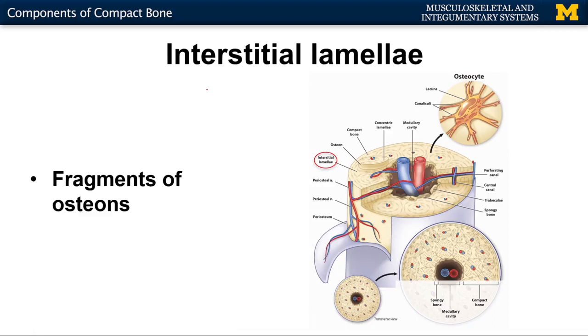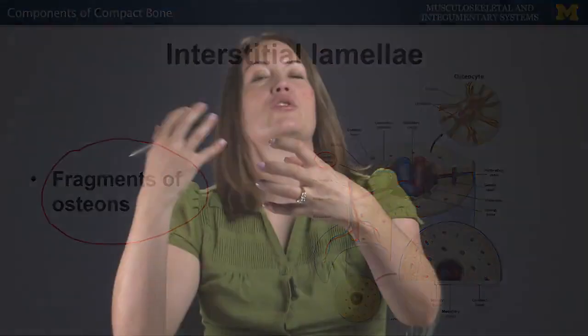Osteons are going to be dynamic and change throughout life. You'll have the formation of new osteons and the breakdown of old osteons — and that's what interstitial lamellae are. You'll have these nice structurally sound osteons, and then fragments of older osteons which will eventually break down completely and have their waste removed. These fragments can still have osteocytes and canaliculi within them.